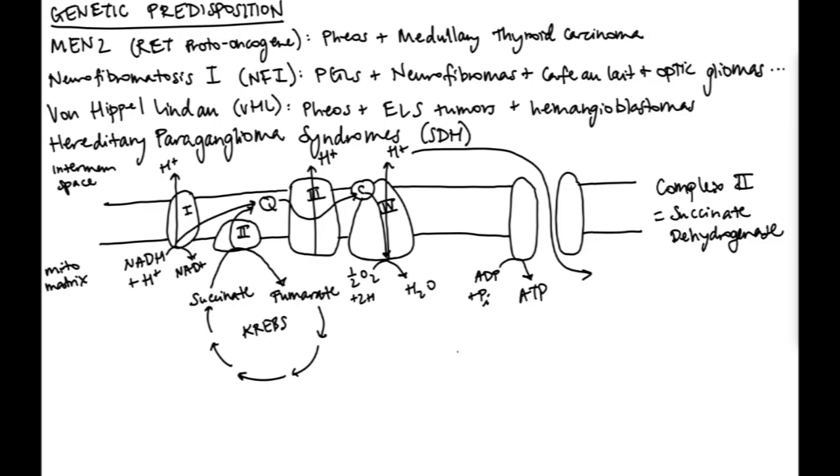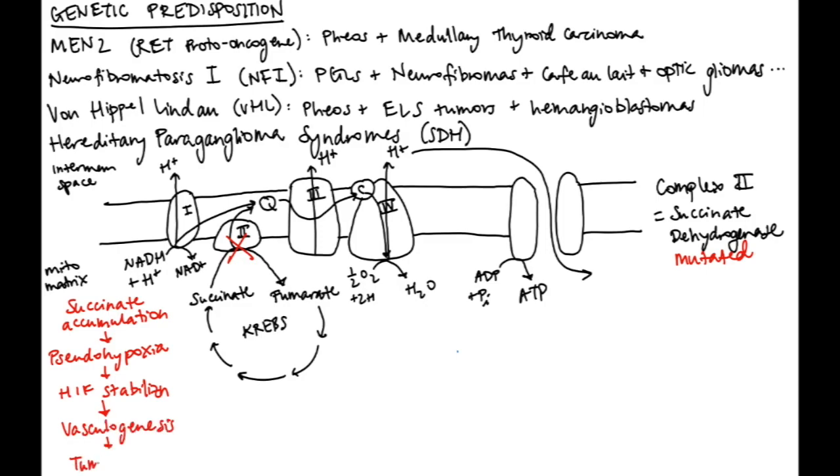Complex II, importantly, is succinate dehydrogenase, which is how the electron transport chain connects to the Krebs cycle. It is unclear how succinate dehydrogenase is related to notch dysregulation. But what is very clear is that if succinate dehydrogenase or complex II is mutated, succinate accumulates because the Krebs cycle can't move forward, leading to a state of pseudohypoxia because the electron transport chain can't move forward. You get hypoxia-inducible factor stabilization, which leads to vasculogenesis, and that facilitates tumorigenesis, and you get a paraganglioma. This is also where von Hippel-Lindau acts in the hypoxia-inducible factor stabilization.